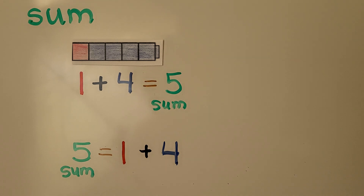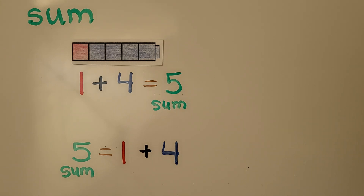The sum of an addition sentence is the total — it's the number in all. For example, 1 plus 4: the sum is 5. It is equal to 5. 5 is the sum.